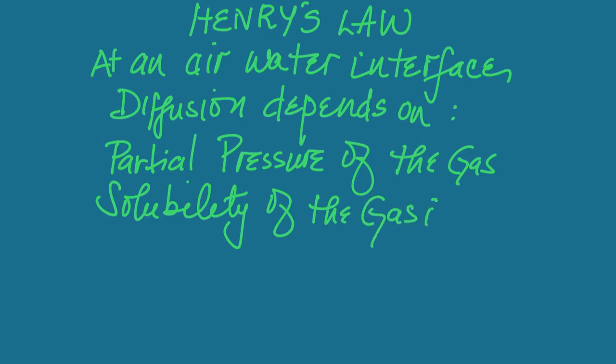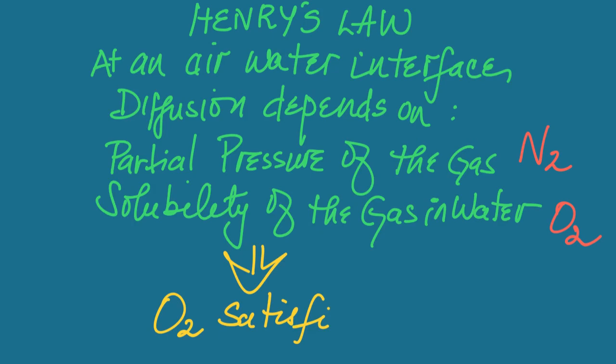Clearly, nitrogen is the one with the highest partial pressure. Oxygen comes a distant second. However, it's oxygen that satisfies both rules. And so it is oxygen that ends up diffusing across the alveolar and capillary walls.